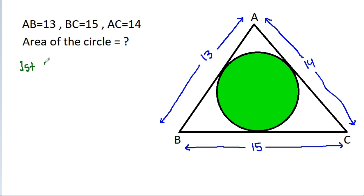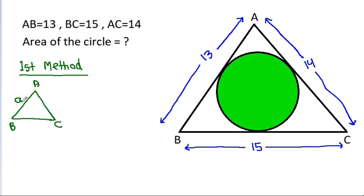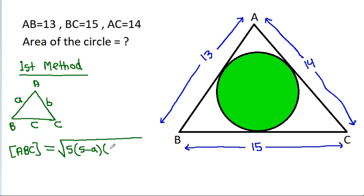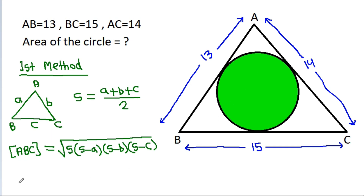So, first method: in any triangle ABC, if AB is A, AC is B, and BC is C, then the area of ABC is equal to the square root of S times (S minus A) times (S minus B) times (S minus C), where S is equal to (A plus B plus C) by 2. So here, S will be equal to (13 plus 14 plus 15) by 2, which is 42 by 2, that is 21.